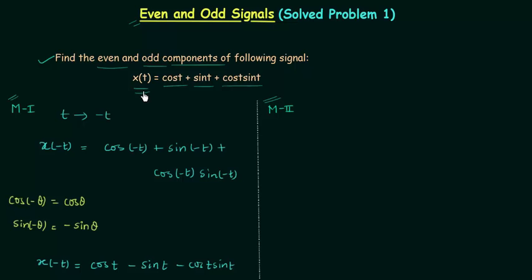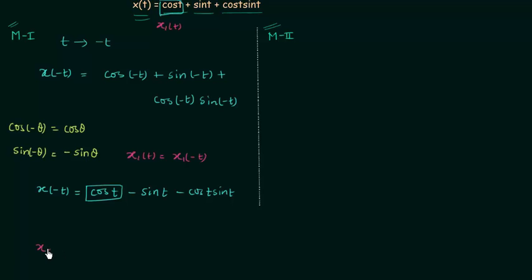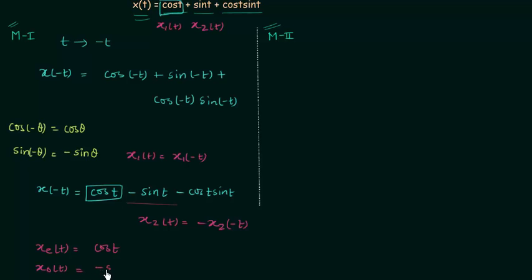Now we compare this with the original signal. cos(t) after time reversal is still cos(t), so if x1(t) = cos(t), then x1(t) = x1(-t), which is the property of an even signal. Therefore, the even component xe(t) contains cos(t). For sin(t): after time reversal we have -sin(t), so x2(t) = -x2(-t), which is the property of an odd signal, so the odd component xo(t) contains sin(t).